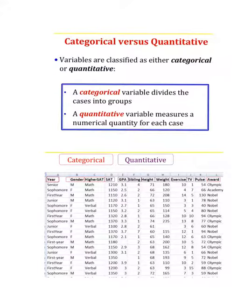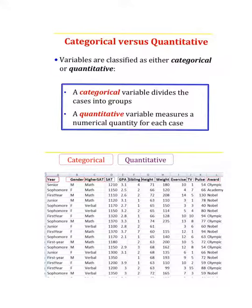Data can be sorted in two different ways: categorical versus quantitative. Categorical also goes by the name qualitative, but it really just has to do with categories — so you might think of year, gender, or the type of award. Quantitative data comes with a number, so you might think SAT score, GPA, height, or weight.